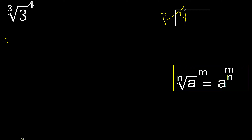3 multiplied by 2 is 6 — 6 is not greater. 3 multiplied by 1 is 3. So 4 minus 3 is 1, giving us a remainder of 1.